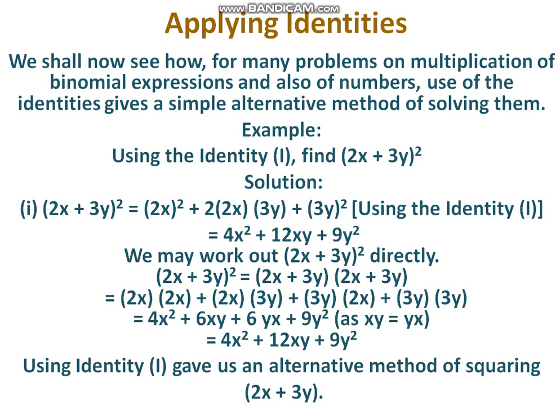Find the product of (2x plus 3y) whole square. Here, 2x plus 3y is in the form of (a plus b) whole square. Substituting a equals 2x and b equals 3y: (2x plus 3y) whole square equals (2x) squared plus 2 into 2x into 3y plus (3y) squared, which gives 4x squared plus 12xy plus 9y squared. We can also verify this by direct multiplication to get the same result: 4x squared plus 12xy plus 9y squared.